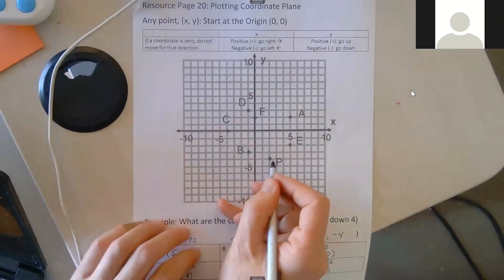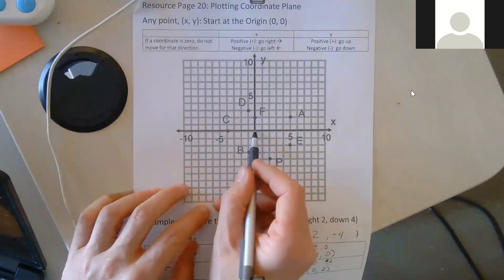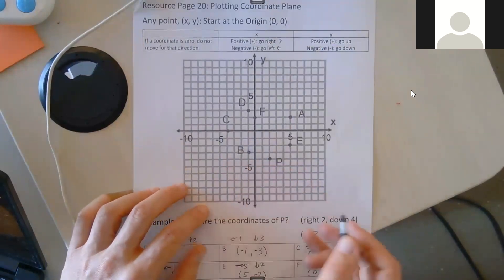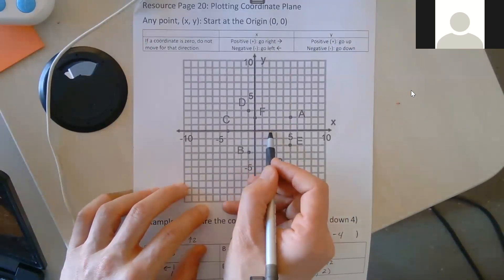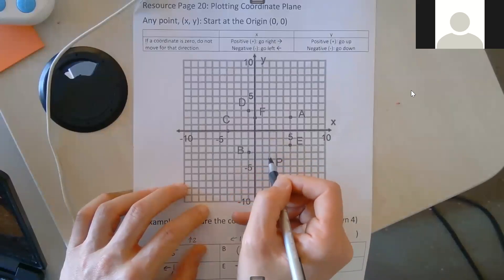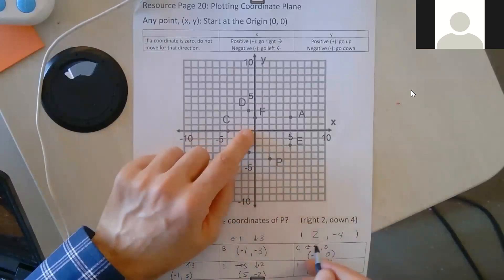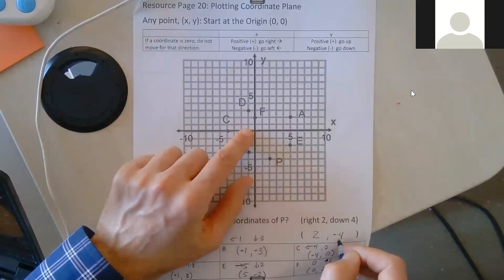We'll start with P. So from the origin to get to P, how far right or left? Because my first number is either right or left. And it's right two units. And then to get to P, I have to go down four units: one, two, three, four. So right two units, that's positive two, then down four units, that's negative four. Okay.